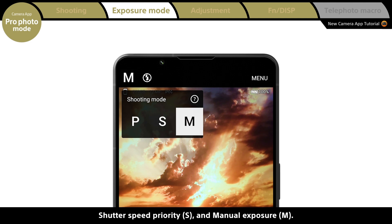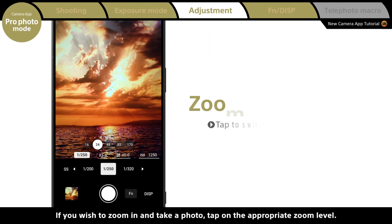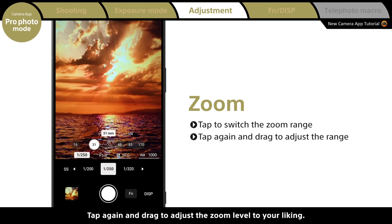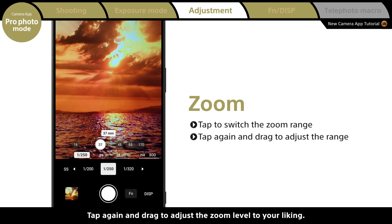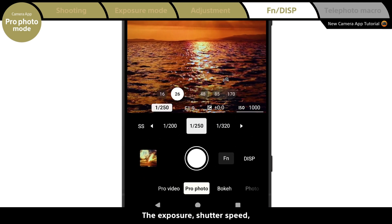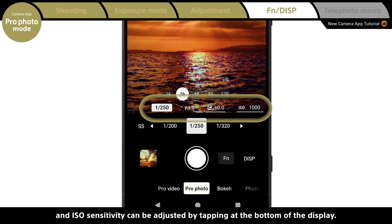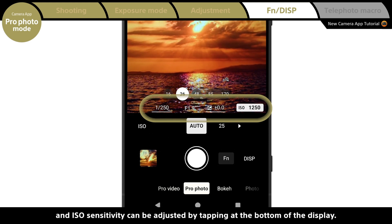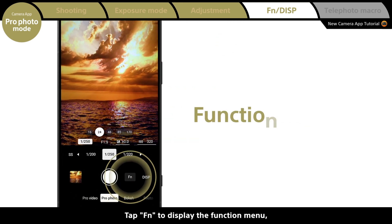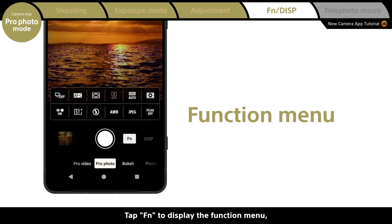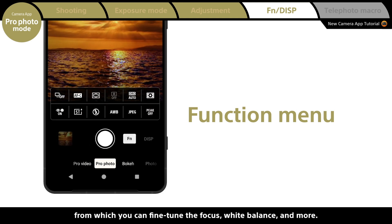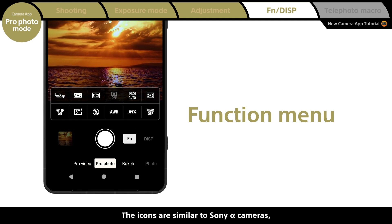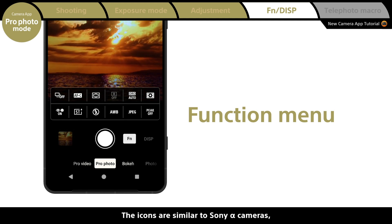If you wish to zoom in, tap on the appropriate zoom level, then tap again and drag to adjust the zoom level to your liking. The exposure, shutter speed, and ISO sensitivity can be adjusted by tapping at the bottom of the display. Tap Function to display the function menu, from which you can fine-tune the focus, white balance, and more. The icons are similar to Sony Alpha cameras, so you can operate these settings with the same level of familiarity.